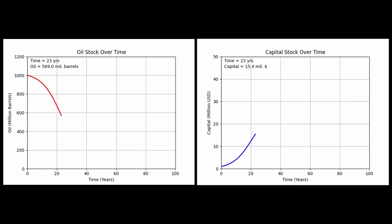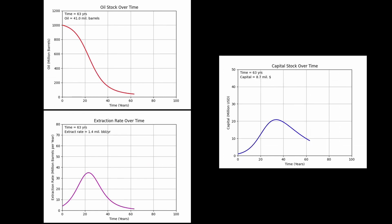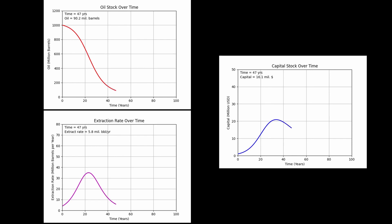Another balancing loop is slowly increasing in power, however. As the stock of oil drops, it becomes less and less profitable to extract it, as more effort is needed for each machine. At a certain point, the company operating the capital will actually stop buying capital and start selling it, because it costs too much to maintain given the amount they can extract. Operations slowly grind to a halt, and for the most part, the rest of the oil stays in the ground as it is no longer profitable to extract it.